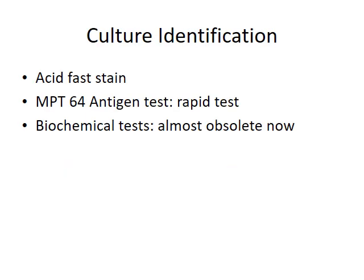After culture, the colonies grown on LJ media and the broth from positively flagged automated culture are confirmed using additional tests. The first is acid-fast stain, that is ZN stain. The next is MPT-64 antigen test, which is a rapid immunochromatographic test. MPT-64 antigen (28-Dalton antigen) is highly specific for M. tuberculosis complex and negative for non-tuberculous mycobacteria. There are also biochemical tests like Niacin test, Nitrate reduction, and Pyrazinamidase test, but these are now almost obsolete.